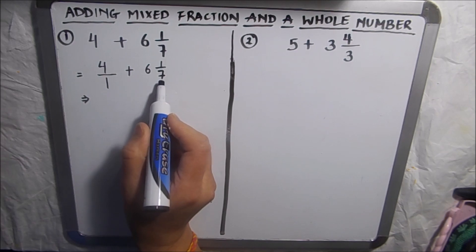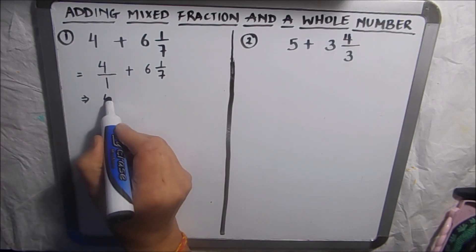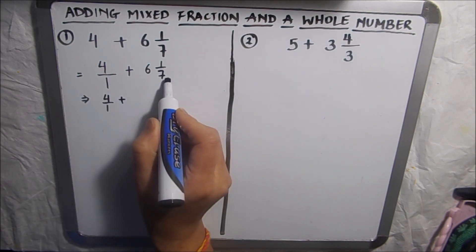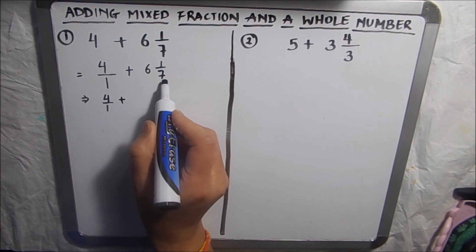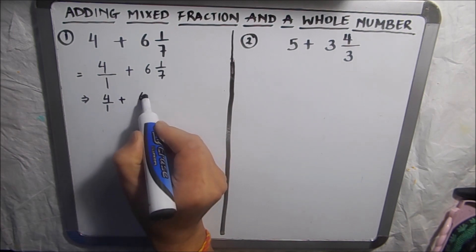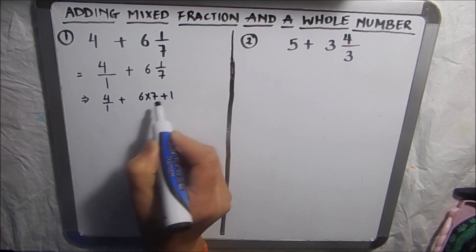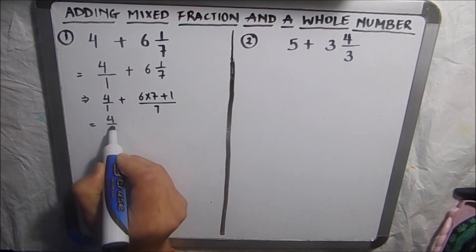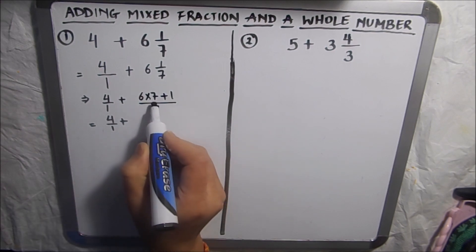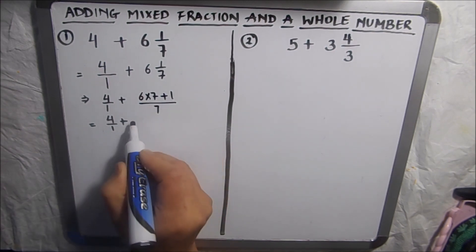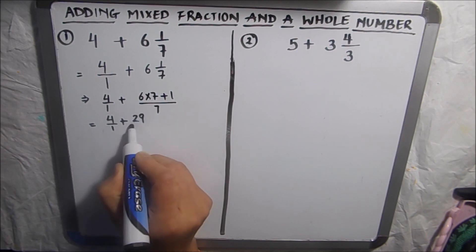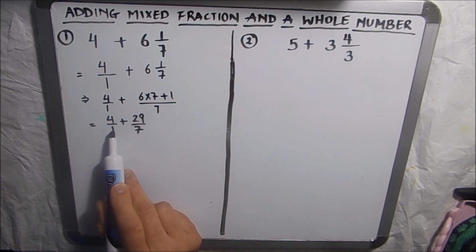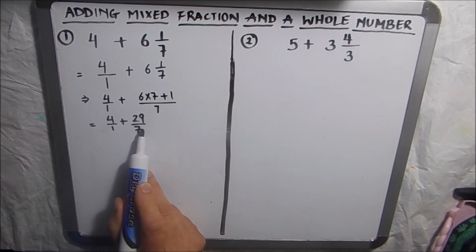The next step is to convert this mixed fraction into an improper fraction. So we will write 4 over 1 as is, and we will convert the mixed fraction into an improper fraction. For this, we have to multiply 6 times 7 plus 1 over 7. So this is going to be 4 over 1 plus — 6 times 7 is 42, plus 1 — giving us 29 over 7.